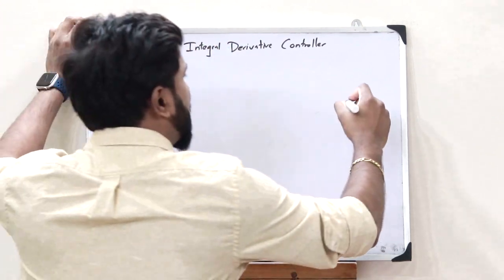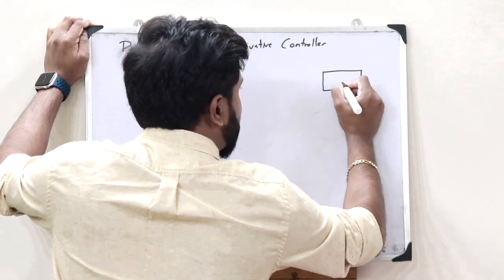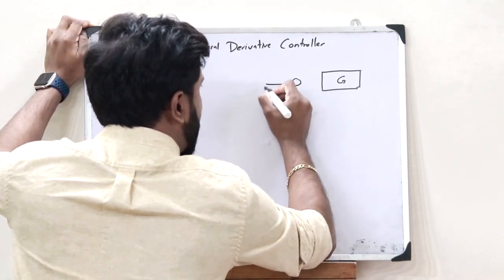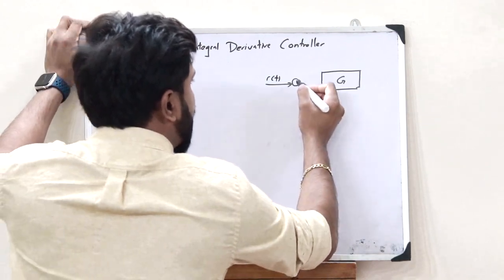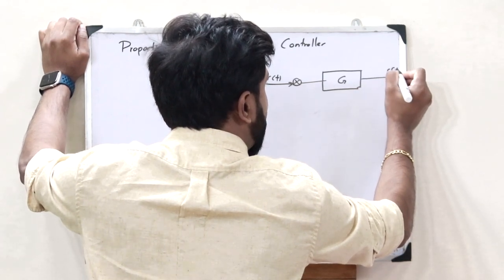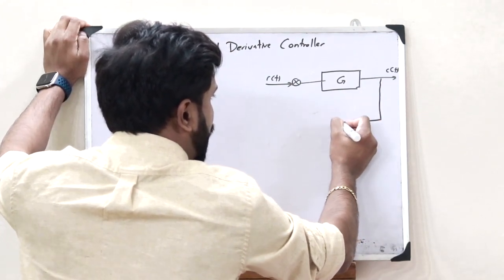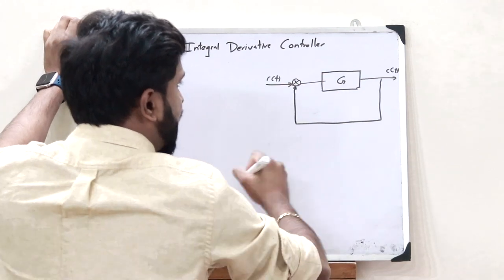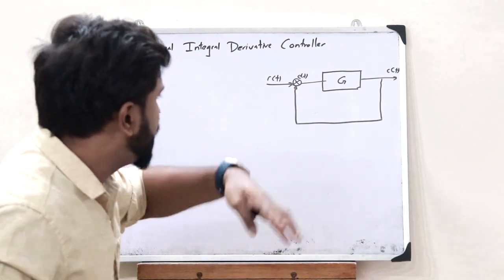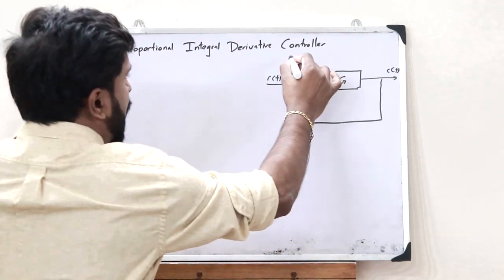Let us consider a particular control system with a forward loop transfer function say G. Let us give a particular input say R. When we give an input R, we get an output C. Let us assume that this is a unit negative feedback control system. In that case, we will have an error signal E.